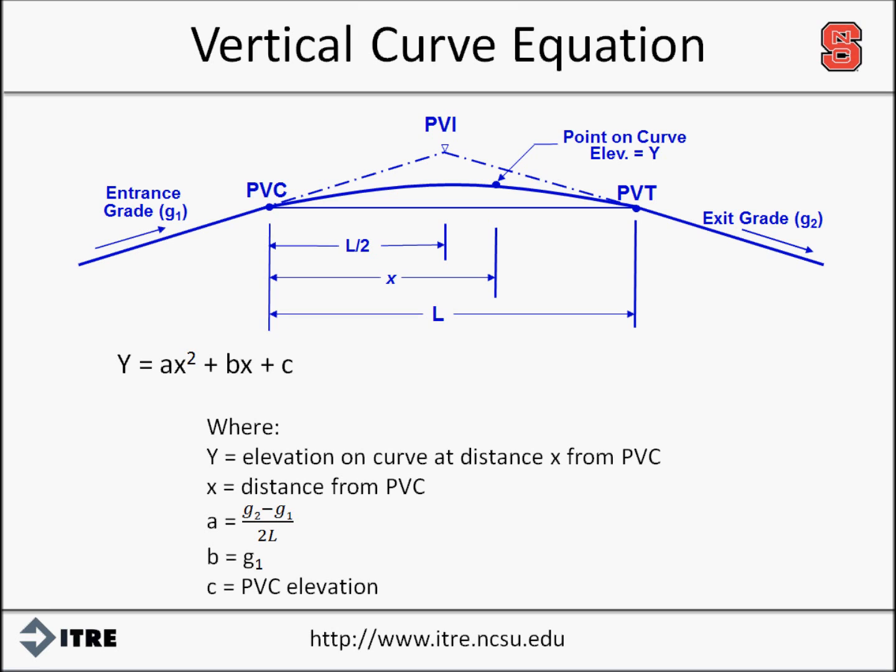The PVI is the point of vertical intersection, and is the point where the two tangents meet. The PVC is the point of vertical curvature, and is the point where the curve begins. And the PVT is the point of vertical tangency, and is the point where the curve ends.